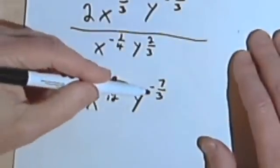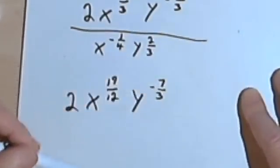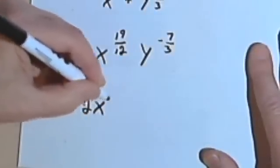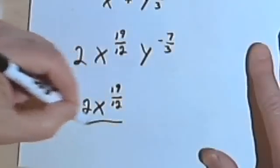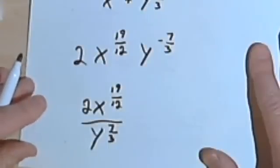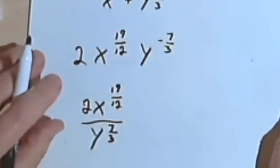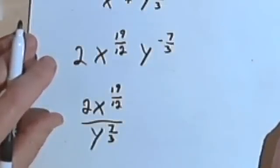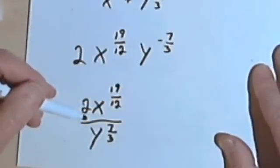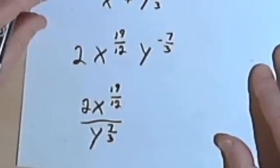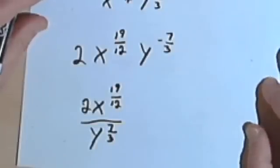All I have left to do is get rid of that negative exponent, which means I'm going to move y to the negative 7/3 down to the denominator and make it a positive exponent. So my final answer is 2x to the 19/12 over y to the 7/3. Everything I did here followed exactly the same rules you would use with whole number exponents — the only difference was doing the extra work with fractions, but the rules didn't change. The way to get good at this is plenty of practice. Review your fraction rules and exponent rules if needed. Take care, I'll see you next time.